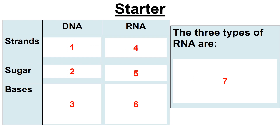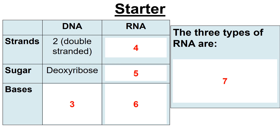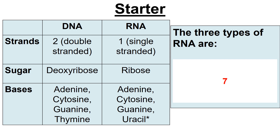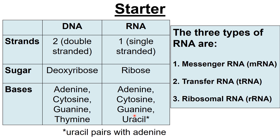Welcome back. Starter this time — write down numbers one to seven and see if you can fill in. DNA has two strands; the sugar is deoxyribose; the bases are adenine, cytosine, guanine, and thymine. RNA is single-stranded; the sugar is ribose; the bases are adenine, cytosine, guanine, and uracil — and remember uracil pairs with adenine. And your three types of RNA for number seven: messenger RNA, transfer RNA, ribosomal RNA. Bear in mind you use a lowercase letter when writing them in short form.